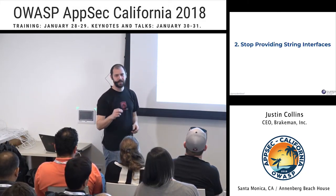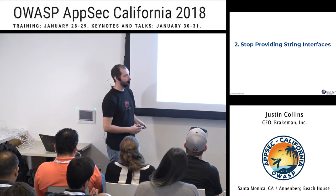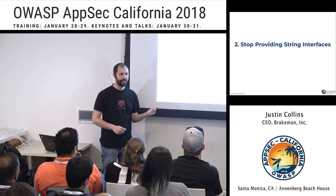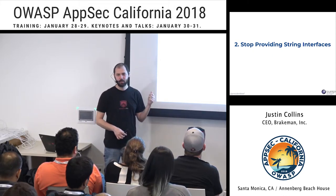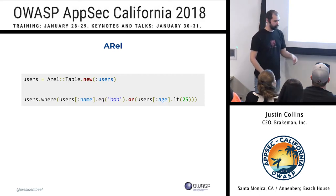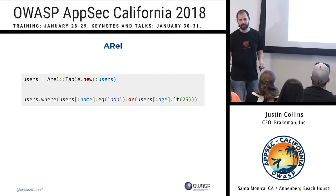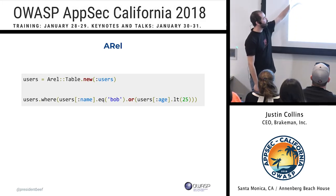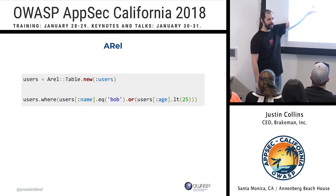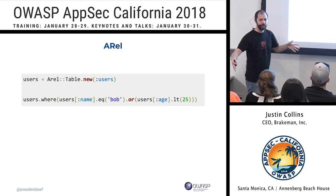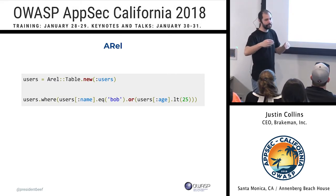SQL injection has been around 20 years — maybe we should stop building database queries by putting strings together. Here's an example from the Rails world: instead of manipulating strings, we make method calls and everything passed in is treated appropriately in the query, so we can pass in untrusted input and it will be properly escaped, generating the query for us. We're not working at the string level anymore — we're at least one step up from there.